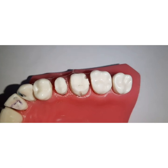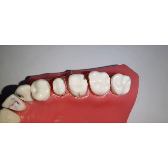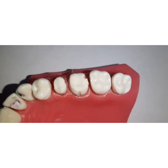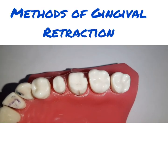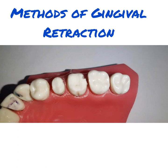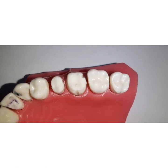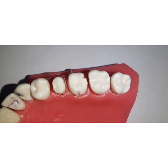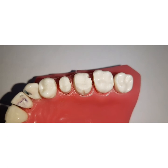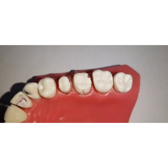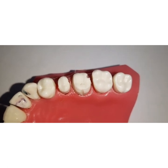There are three methods of gingival retraction: one is the mechanical method, second is the chemical mechanical method, and third is the surgical method. Let us see each one of them one by one.